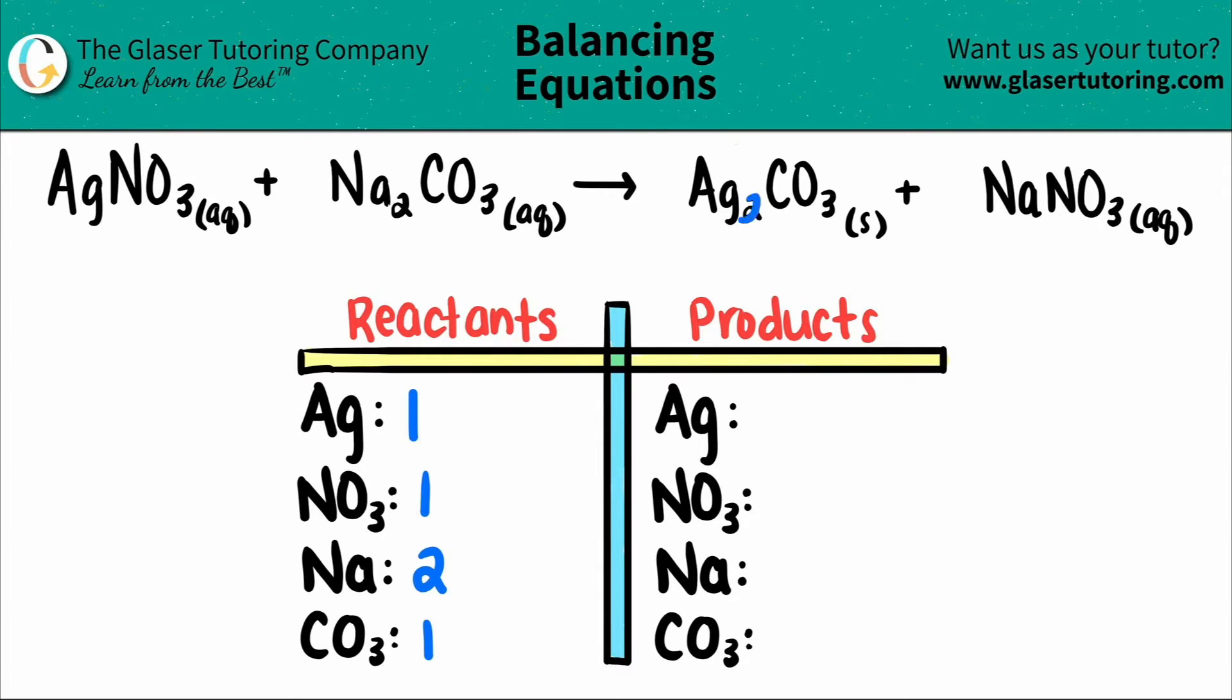Coming over to the product side, now I see that I have two Ags. So I'm going to put a two here. The three is part of the carbonate, but there was no parentheses. So that means that there is one carbonate.